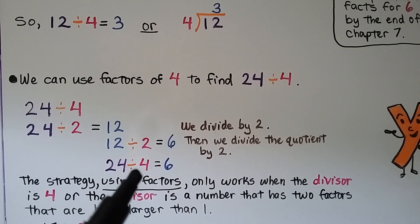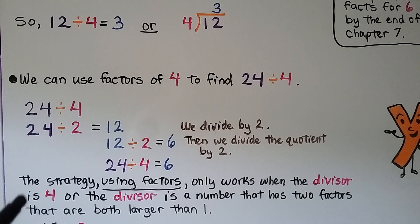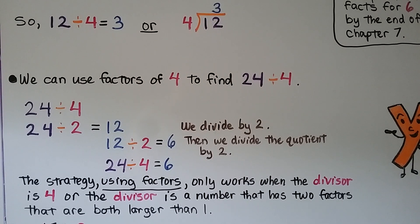That means 24 divided by 4 is equal to 6. The strategy using factors only works when the divisor is 4 or the divisor is a number that has 2 factors that are both larger than 1.